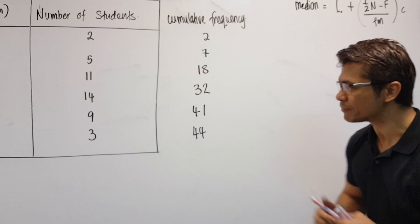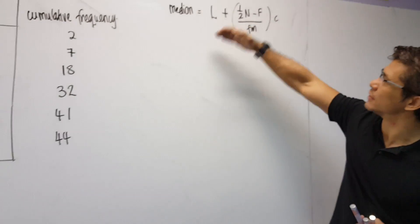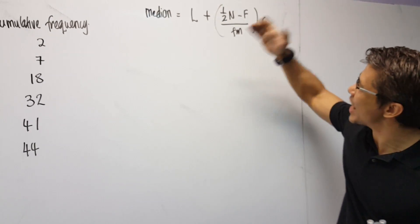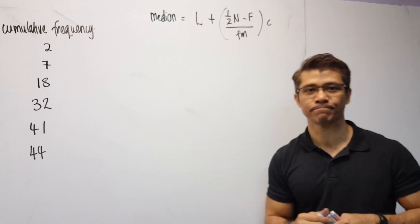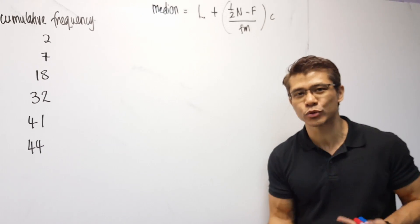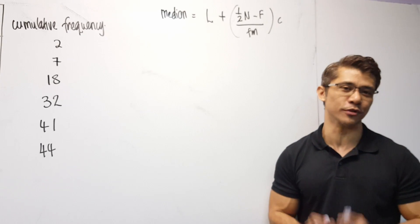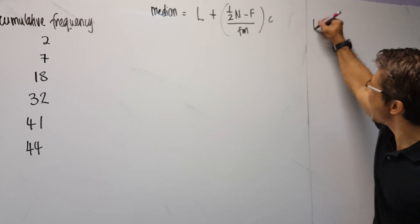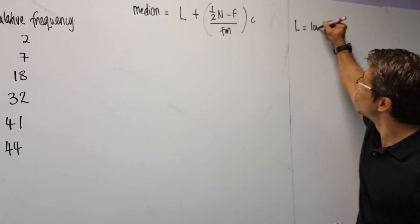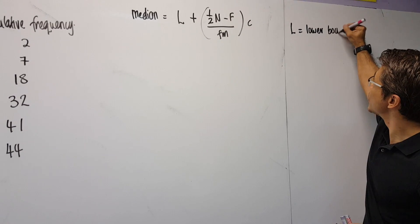Now notice that the total frequency is 44. However, what do we mean by L, N, F, fn, and c? Well, I won't use complicated terms to explain these letters. Let's try to make it as simple as possible.